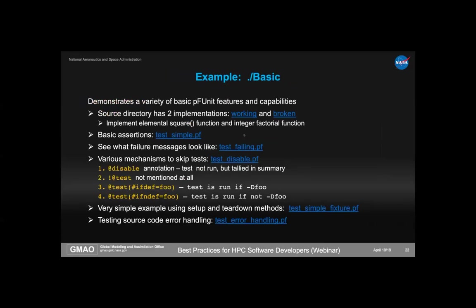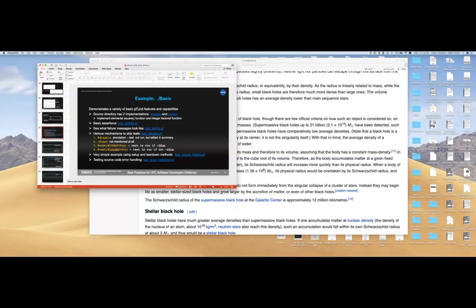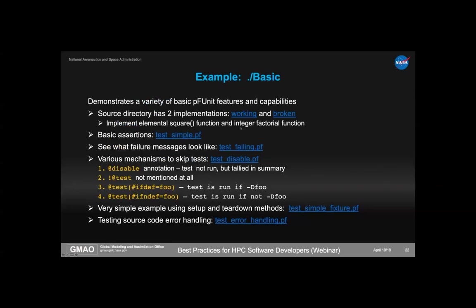Now let's go to a more realistic example that illustrates more capabilities. I have two implementations in this directory: one called working_set and one called broken_set. The broken_set tests will fail; the working ones will pass. Other than that, they're virtually identical. They implement two things: an elemental square function so you can square entire arrays, and an integer factorial function to illustrate handling of illegal inputs.